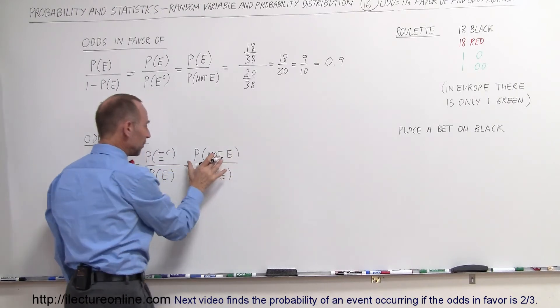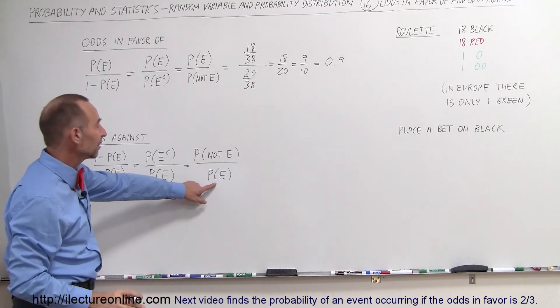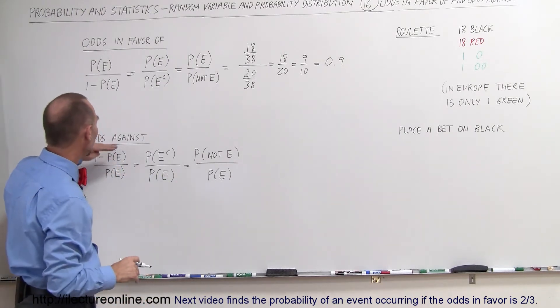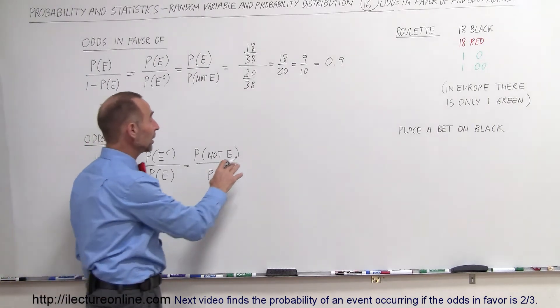So in other words, the probability that the event will not occur divided by the probability that the event will occur. And again we want a winning event, so what is the odds against winning?